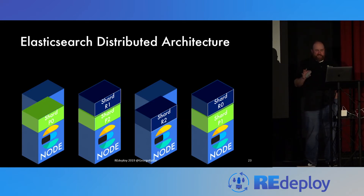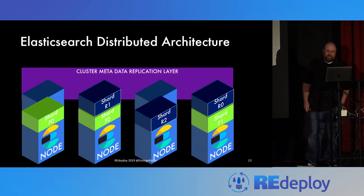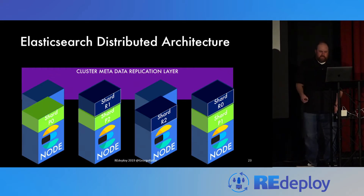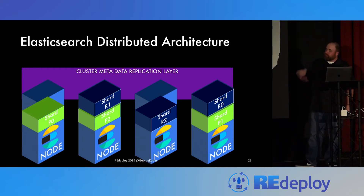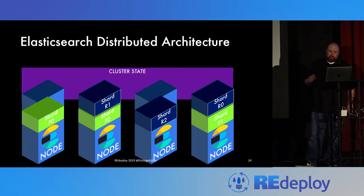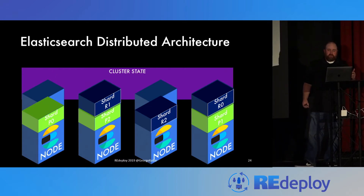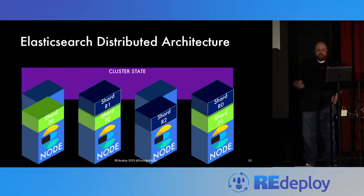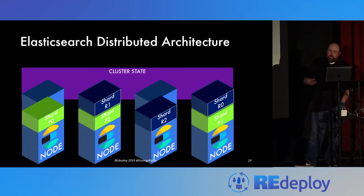Almost done with the architecture. At the cluster level we have a cluster coordination metadata replication layer. The metadata determines which indices are part of the cluster, the schema or mapping similar to a relational database, which nodes hold the primary and replica shards, and whether shards are in or out of sync. All of this data is captured into an object called the cluster state, which is shared and available across all nodes in the cluster — crucial for each node to know where data resides and coordinate new search requests.